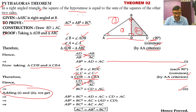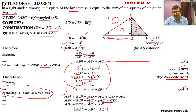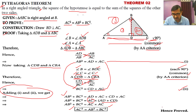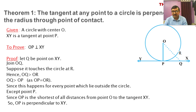Adding the two equations: left-hand side becomes AB² + BC². Right-hand side: AD × AC + CD × AC. AC is common, so factoring: AC × (AD + CD). From the figure, AD + CD = AC, so this becomes AC × AC = AC². Hence, the square of the hypotenuse equals the sum of the squares of the other two sides. Pythagoras theorem — hence proved.